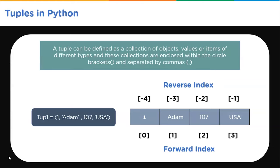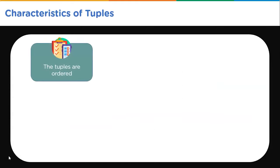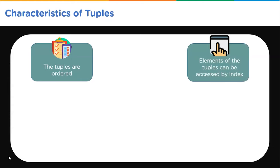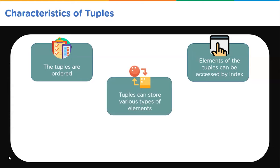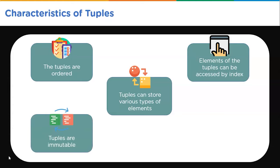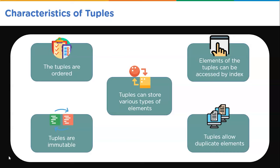Let's look at the characteristics of tuples. First, tuples are ordered — items have a defined order that will not change. Second, elements can be accessed by index. Third, tuples can store various types of elements such as strings, arrays, and others. Fourth, tuples are immutable — we cannot change, add, or remove items after the tuple has been created. Fifth, tuples allow duplicate elements since they are indexed and can have items with the same value.